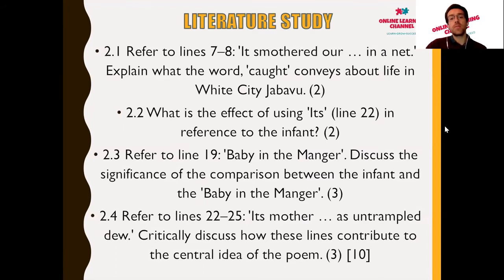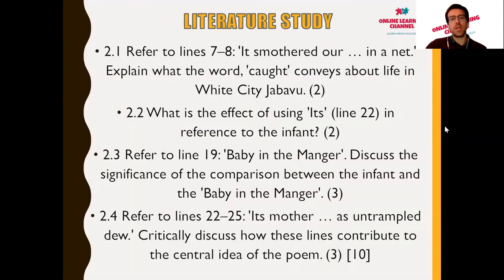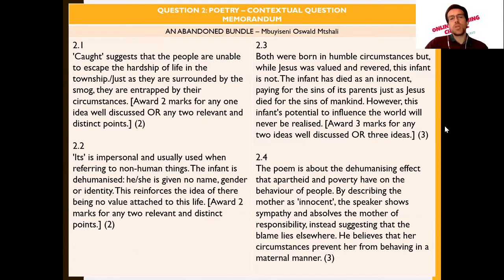'Caught' suggests that the people are unable to escape the hardship of life in this particular township — just as they are surrounded by the smog, they are entrapped by their circumstances. Two marks would be awarded for any two relevant or distinct points well discussed. Question 2.2 asks: what is the effect of using 'its' in line 22 in reference to the infant? 'Its' is impersonal and usually used when referring to non-human things, so the infant is dehumanized — not given a name, gender, or any form of identity — reinforcing the idea of there being no value attached to this infant's life.